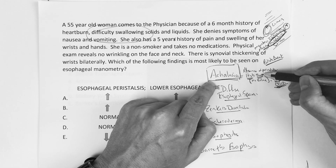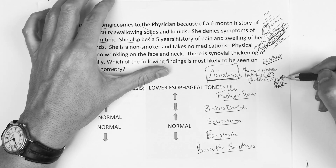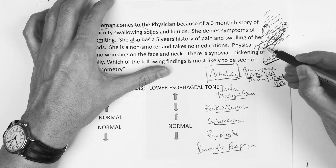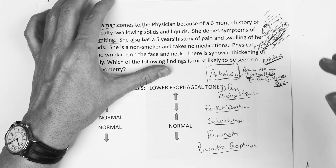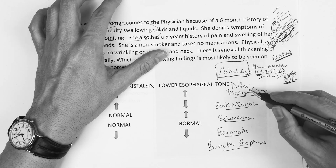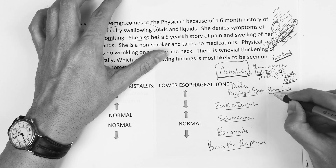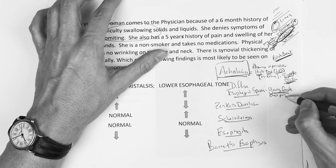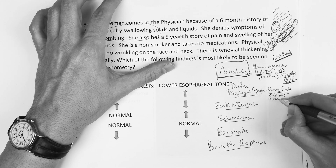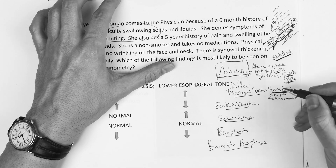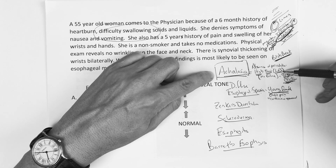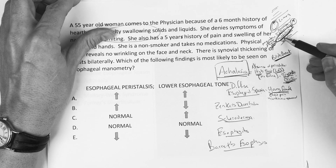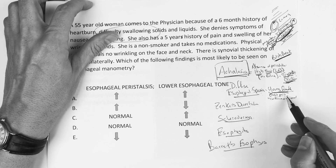For diffuse esophageal spasm, think young female — that's the pathomnemonic. They have difficulty swallowing and chest pain, and the classic finding is the corkscrew appearance on imaging. So to compare: achalasia has absence of peristalsis, high tone of the lower esophageal sphincter, no relaxation, bird's beak appearance, Trypanosoma cruzi, pathology at the myenteric plexus of the muscularis. Diffuse esophageal spasm: young female, chest pain, corkscrew appearance.